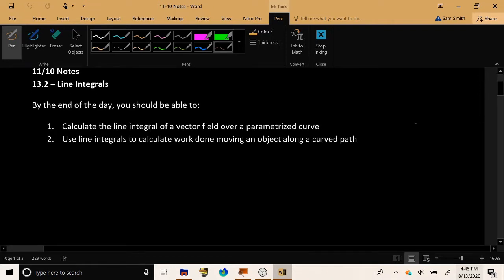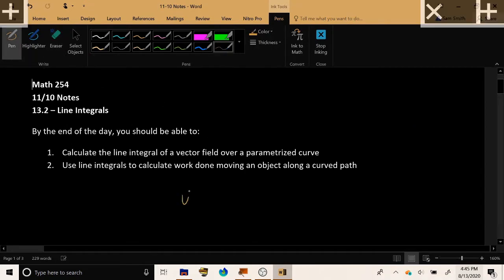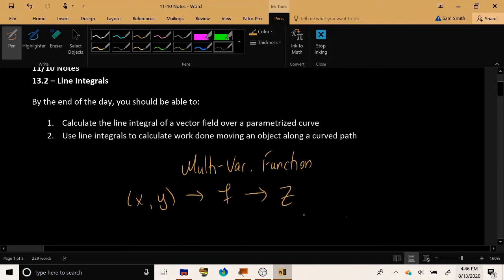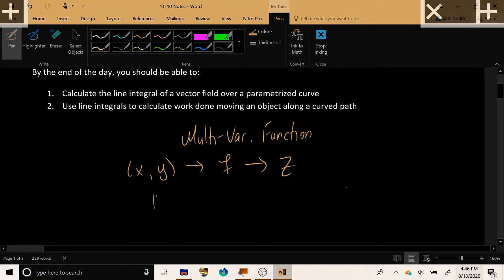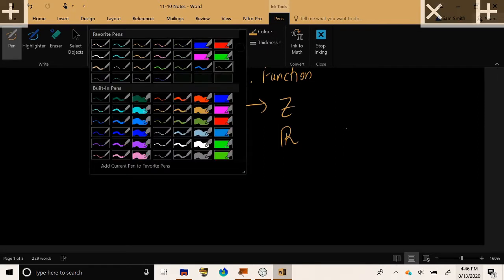And just to make clear the distinction between these two, a multivariable function takes in a point (x, y) in R² and produces a single number, usually called z. So its input lives in two-dimensional space and its output is a single real number living in one-dimensional space.